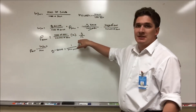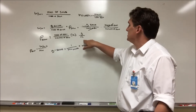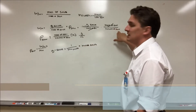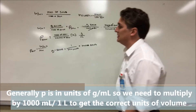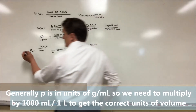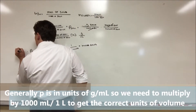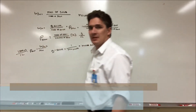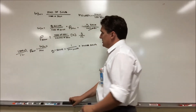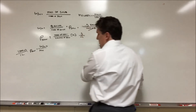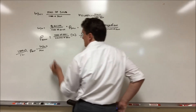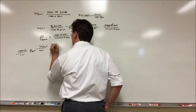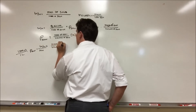Typically, density is in grams per milliliter, so we'll have a milliliter in the denominator. We need to convert this to liters, so for every thousand milliliters we have one liter of solution. This gives us the correct units of moles per unit volume, which is molarity.